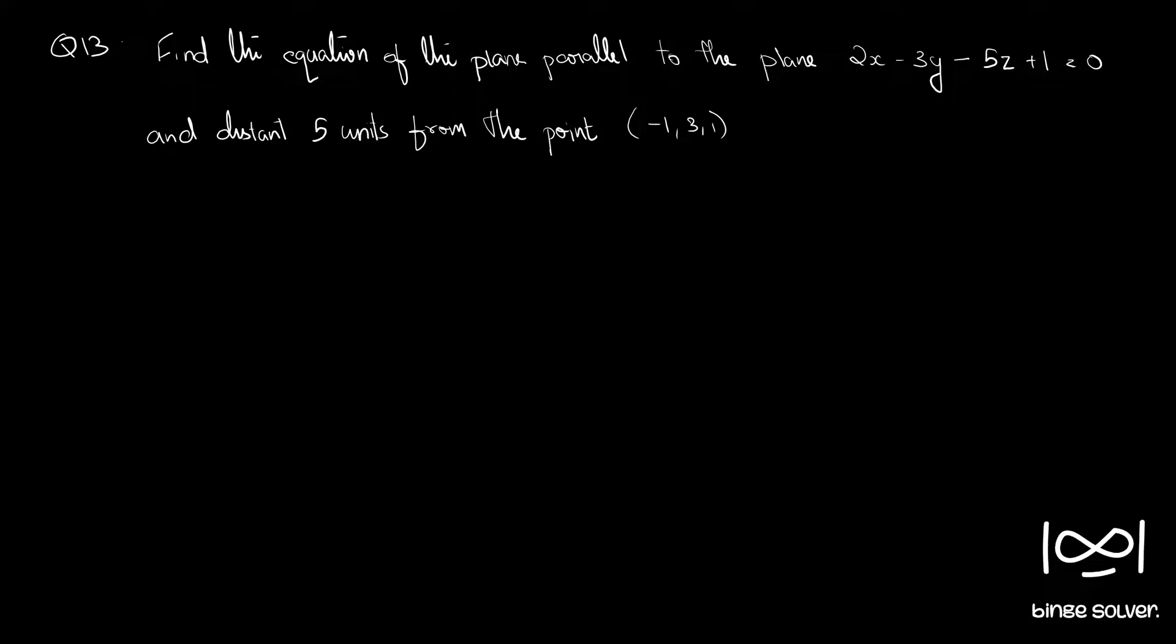Question 13. Find the equation of the plane parallel to the plane 2x minus 3y minus 5z plus 1 equal to 0 and distance 5 units from the point minus 1, 3, 1.